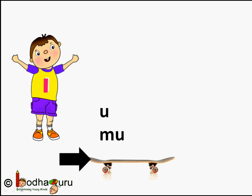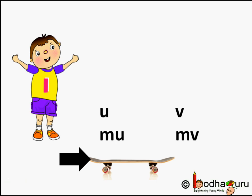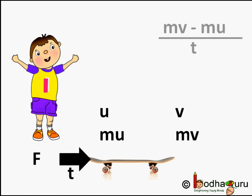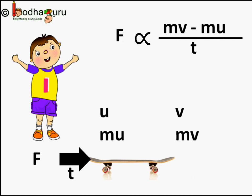Say something with mass m was moving with velocity u. Now, you give it a push and its velocity increases to v. So, u is the initial velocity and v is the final velocity. The final momentum would be mv, and the initial momentum would be mu. Say force F was applied throughout time t. So, the rate of change of momentum equals final momentum minus initial momentum divided by time, which becomes mv minus mu divided by t. And this is proportional to the applied force.